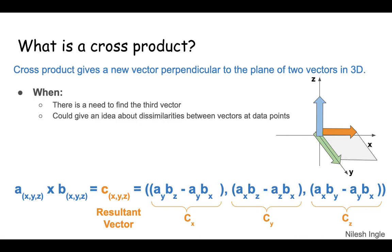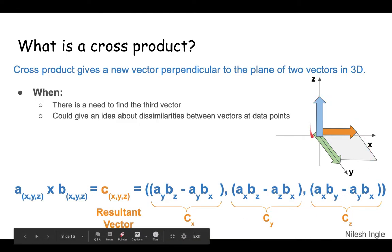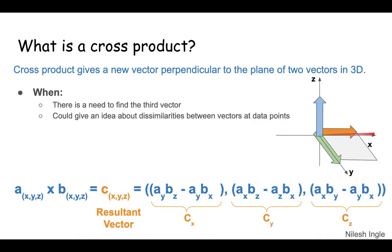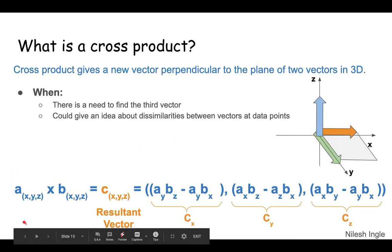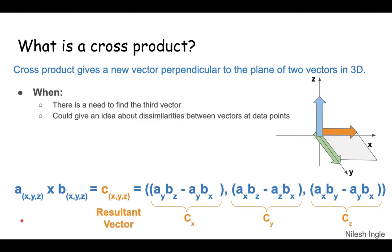The cross product is in contrast to the dot product. The dot product talks about similarities between two vectors, whereas a cross product tells us about dissimilarities. A cross product results in a vector that is perpendicular to the plane of the two vectors for which it was calculated, as shown in the figure on the right. Below is the equation that tells us how to calculate this resultant vector, which is orthogonal to the plane of those two existing vectors.